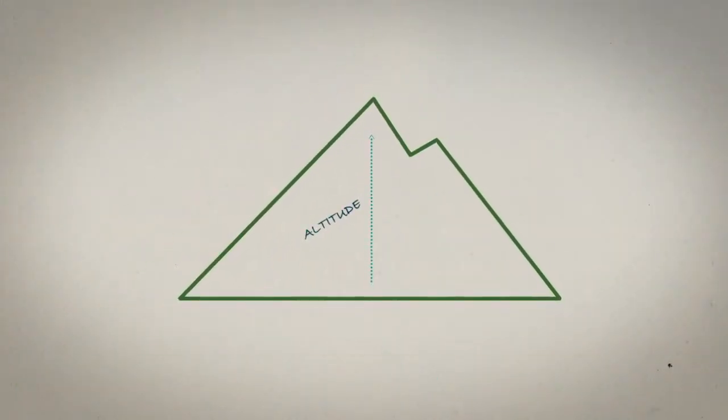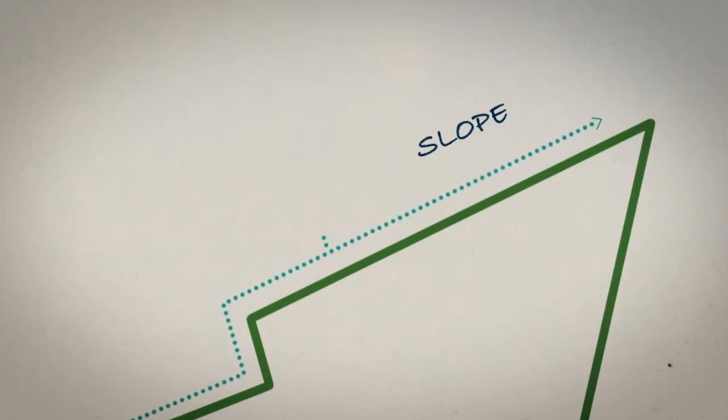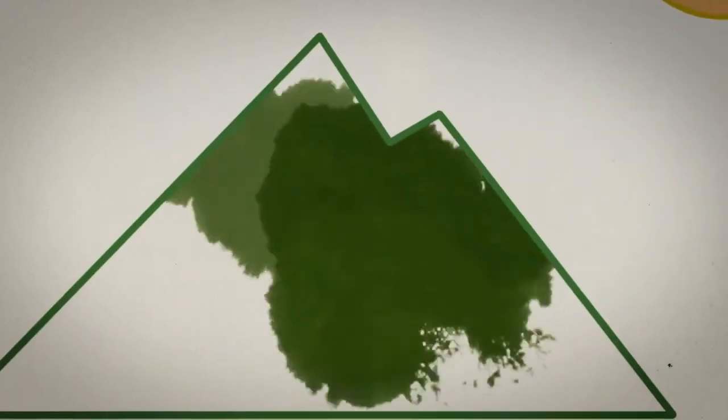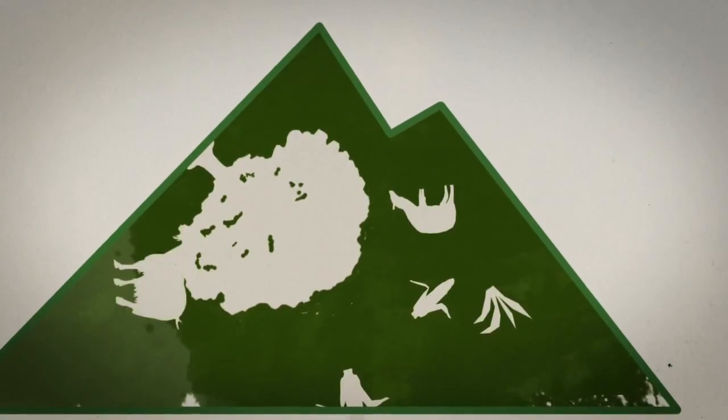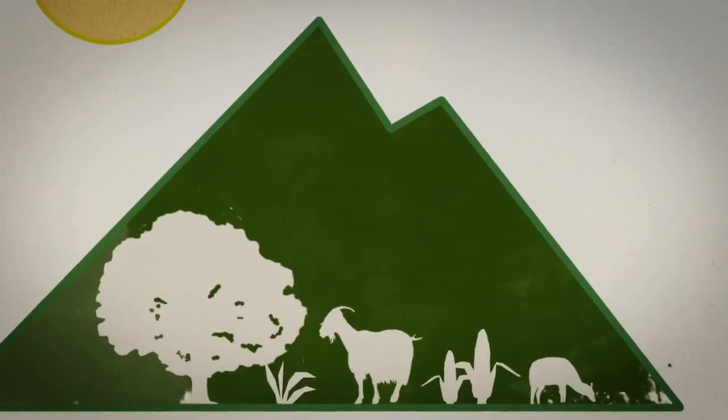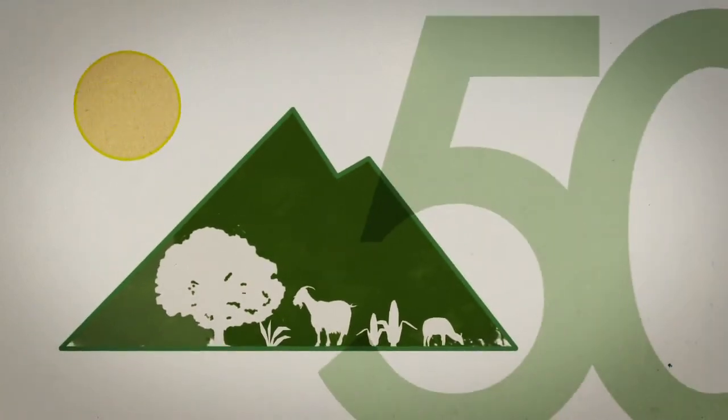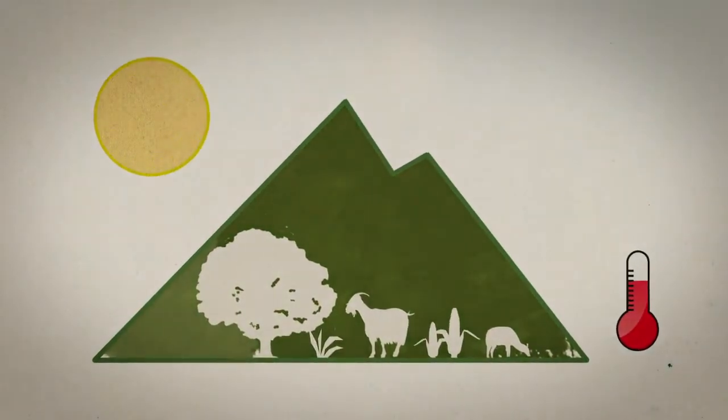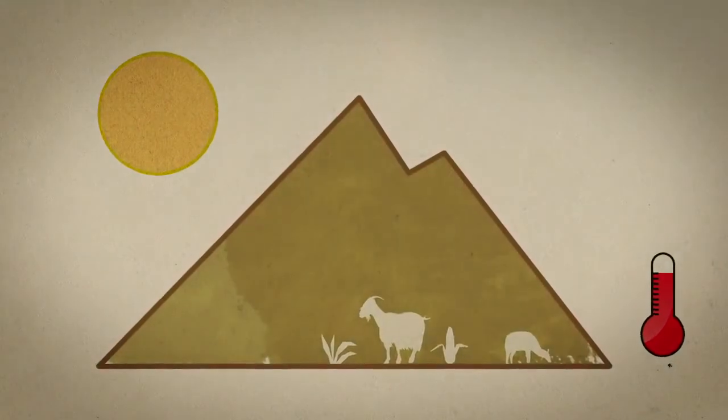Because of their altitude, their slope and their orientation to the sun, mountain ecosystems are easily disrupted by variations in climate. Mountain regions are the custodians of more than 50% of the world's biodiversity. But as temperatures rise, plants and animal species are being threatened.